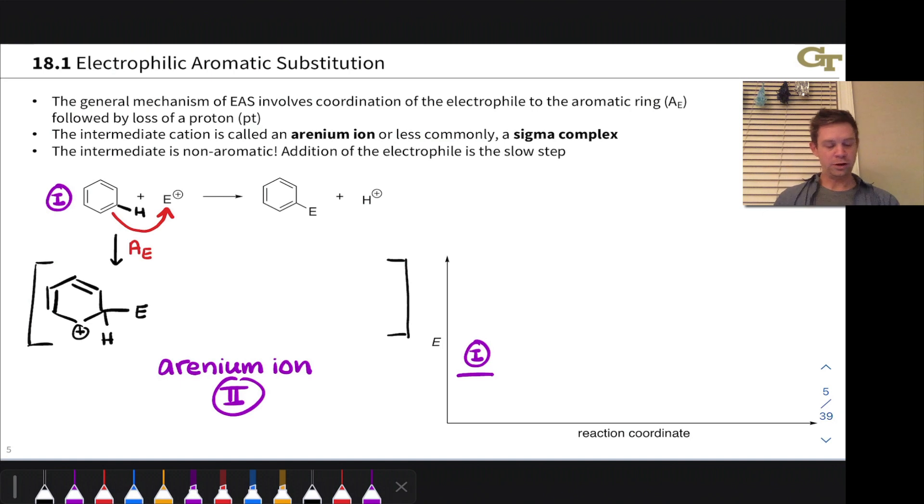Now, some things to note about this species that we've just generated through this electron flow. First of all, it's non-aromatic. We know that because there's a tetrahedral center in the ring now. It's no longer fully conjugated. This is a non-aromatic intermediate, indicating it's much, much higher in energy than the starting aromatic benzene.